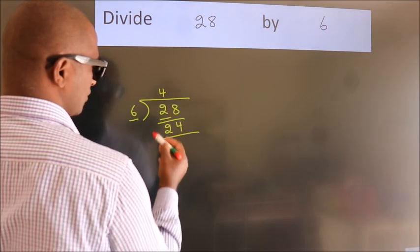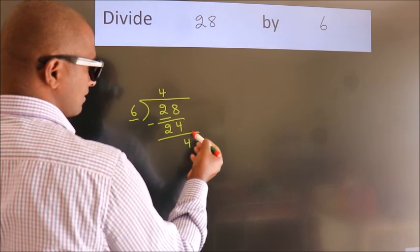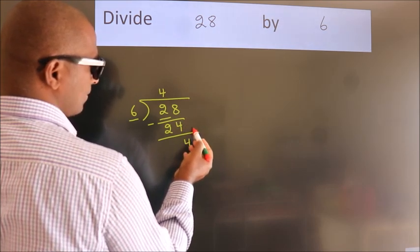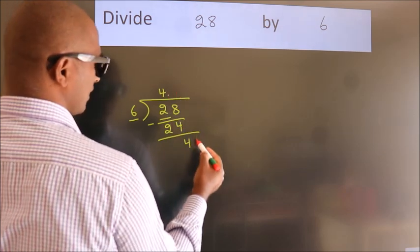Now we should subtract. We get 4. After this, no more numbers to bring down. So what we do is, we put a dot and take 0.